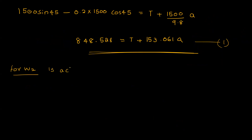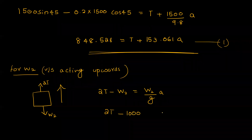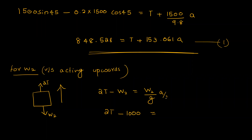For the m2 block, the tension acts upward. Writing the equation for m2: 2T minus W2 is equal to the net force. That is equal to W2 divided by g into a. Substituting W2 equals 1000: 2T minus 1000 equals (1000 divided by 9.8) into acceleration. The acceleration of m2 is a divided by 2 due to the pulley arrangement.